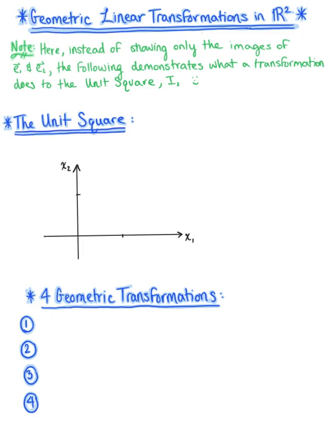To get us started, we want to explore the unit square. The unit square is the 2 by 2 identity matrix, I sub 2. This is the matrix whose column vectors are defined by the elementary vectors e sub 1 and e sub 2 — our 2 by 2 matrix with first column vector 1, 0, and second column vector 0, 1.